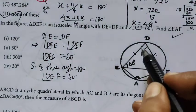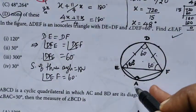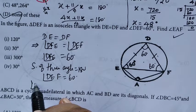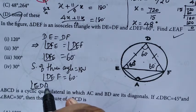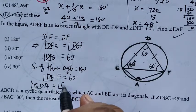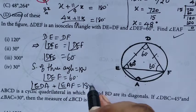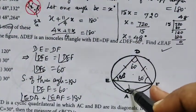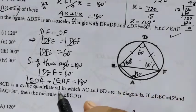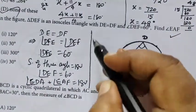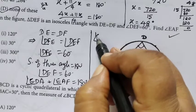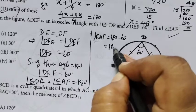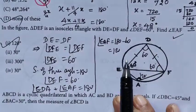So this is the opposite angle. By property, angle DFE equals 180 degrees minus the other angles. The answer for this is 120.